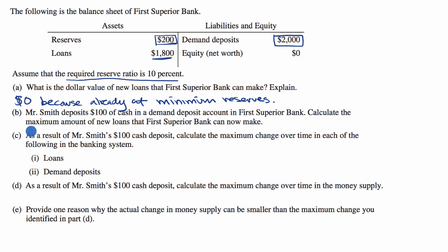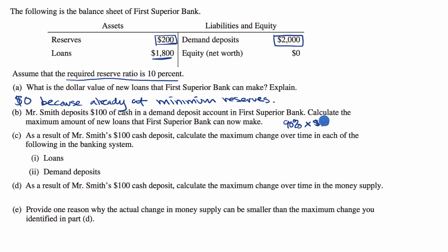Let's do Part B. Mr. Smith deposits $100 of cash in a demand deposit account in First Superior Bank. Calculate the maximum amount of new loans that First Superior Bank can now make. Before Mr. Smith makes that deposit, First Superior Bank can't make any new loans. Now if it gets $100 of cash in a demand deposit account, because the reserve ratio is 10%, the bank needs to keep 10% of that deposit as reserves and can loan out the other 90%. So it could loan out 90% times $100, which is equal to $90 of new loans.